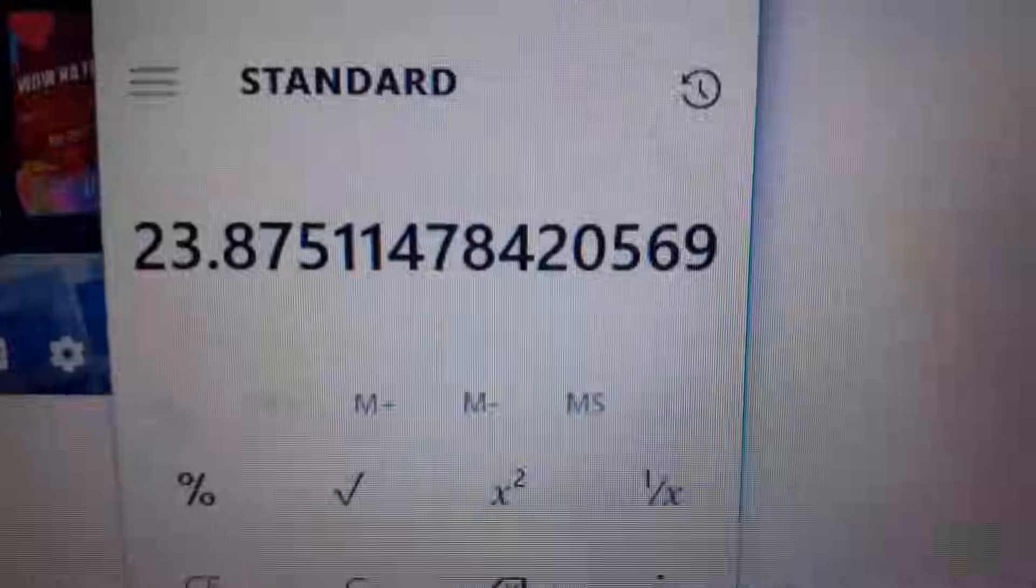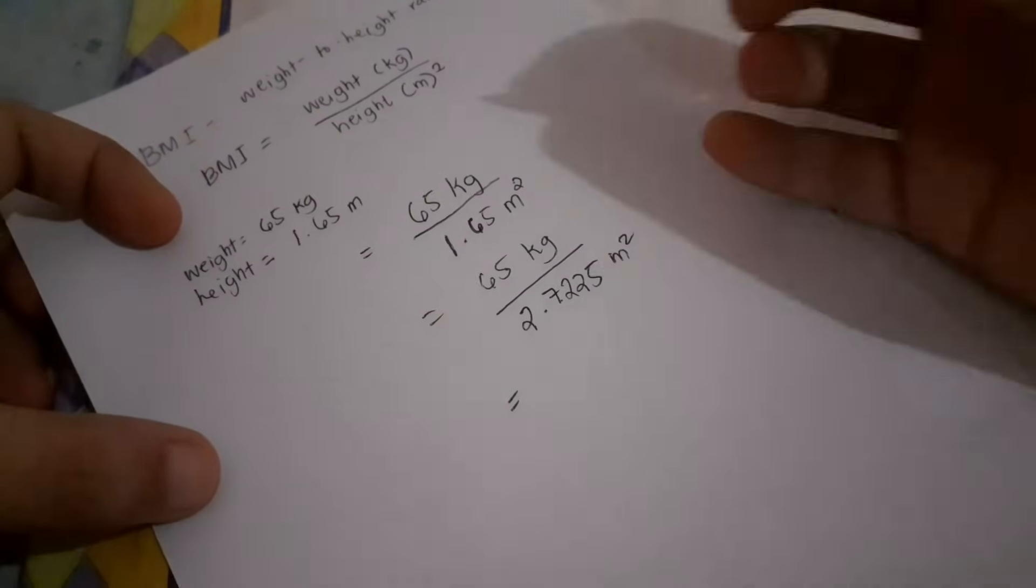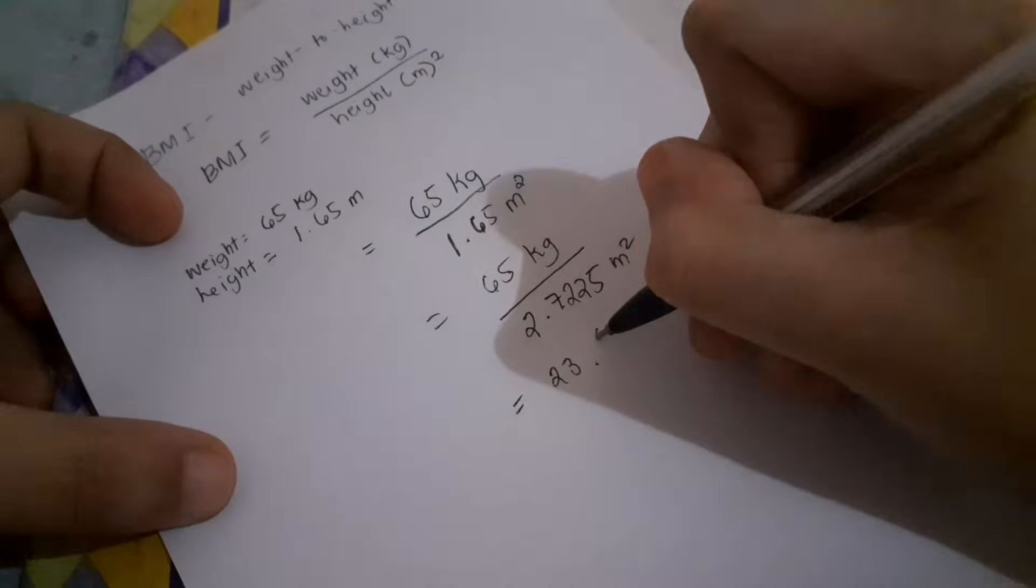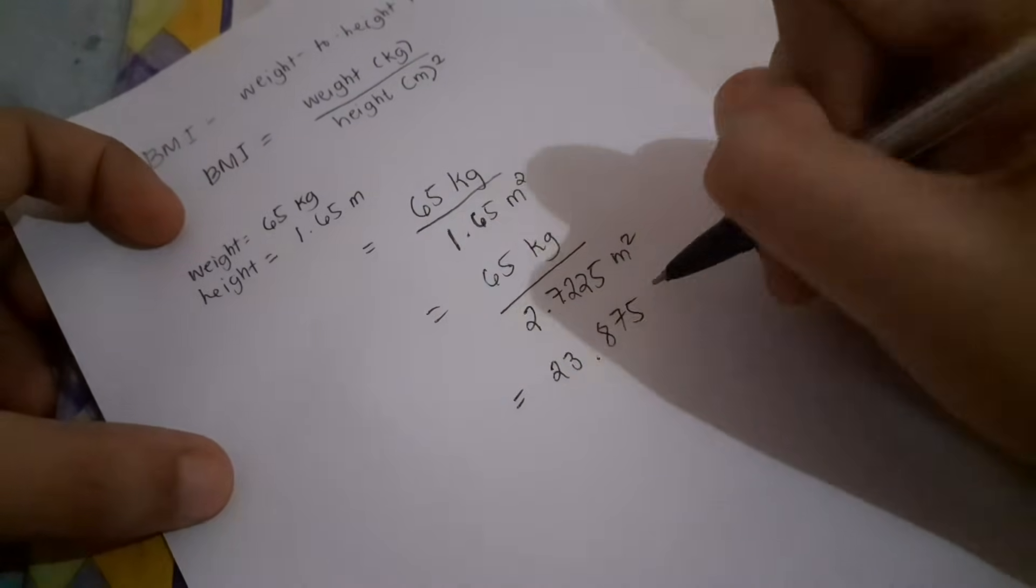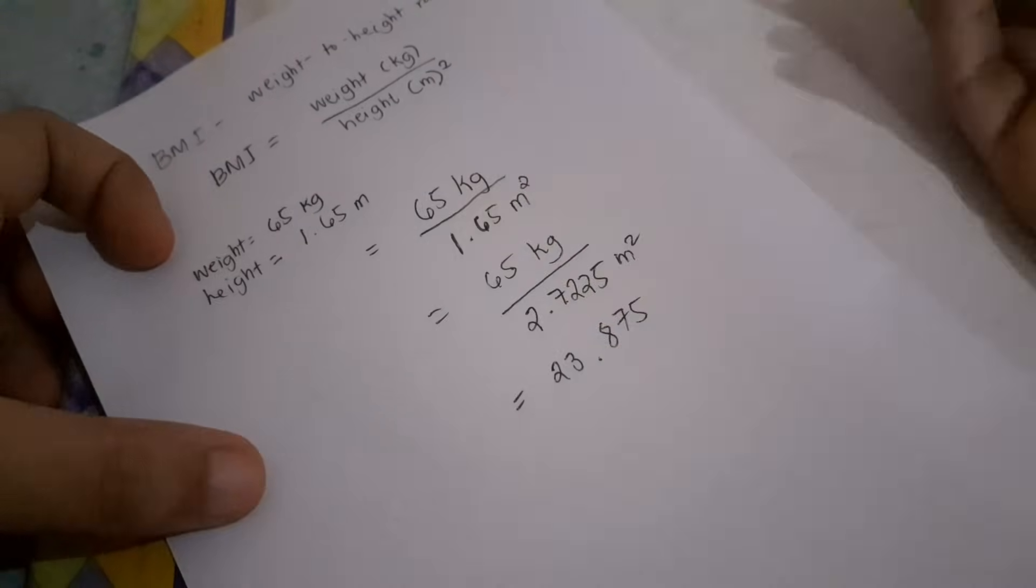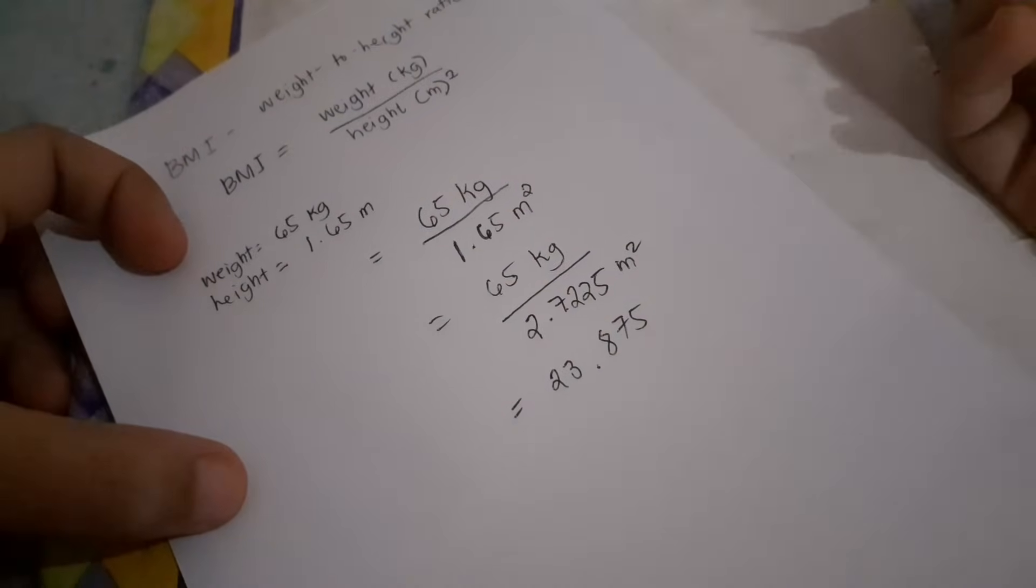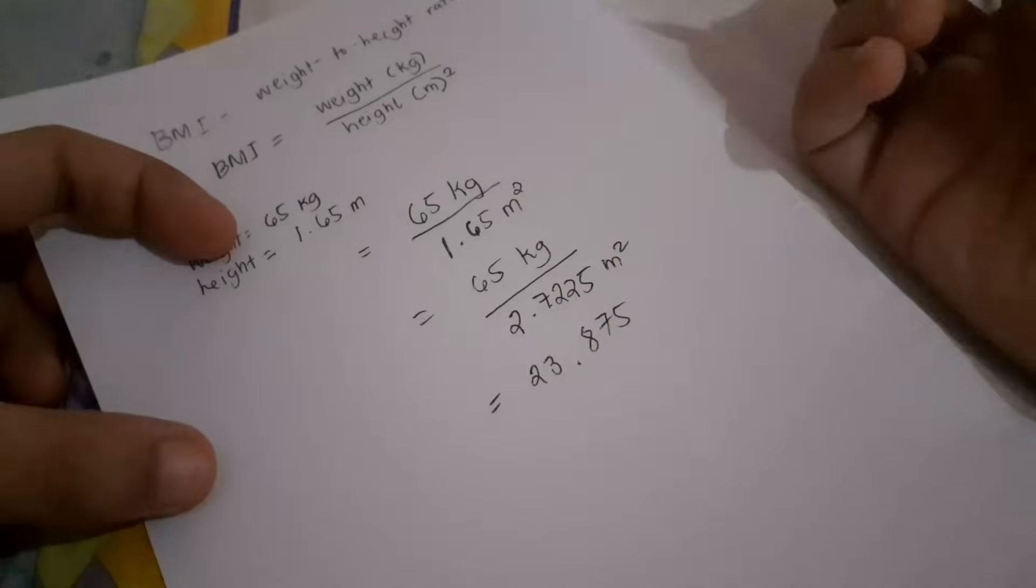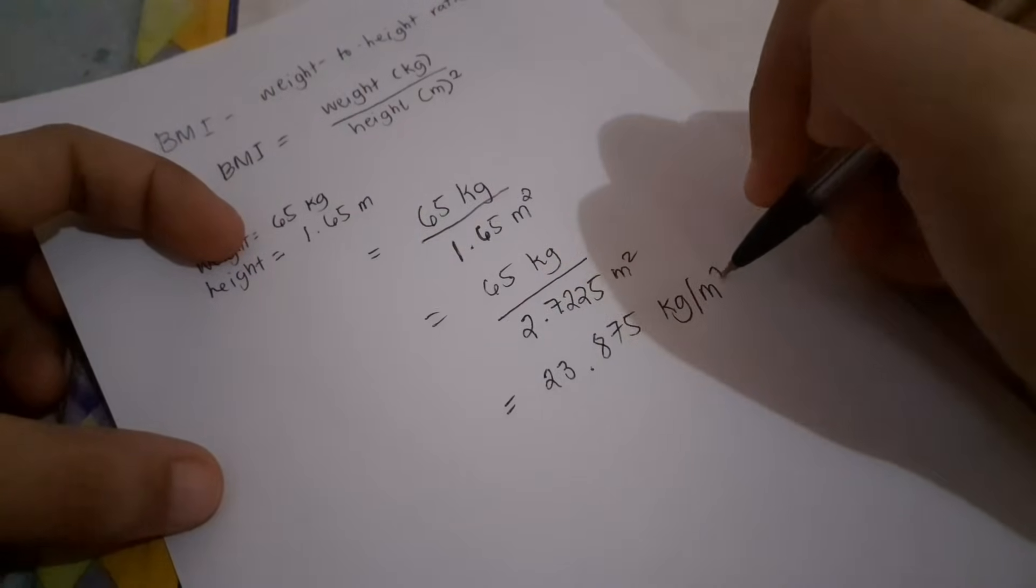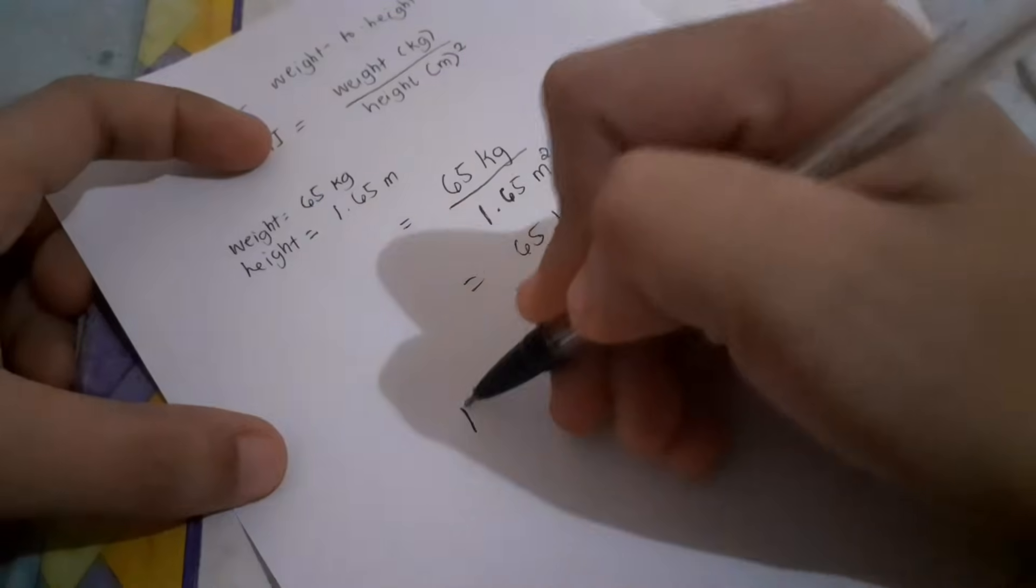Okay, let's copy this. The answer is 23.875 and so on. Round off ko na lang siya. And don't forget the unit, kg per meter squared. So ibig sabihin, ito na yung BMI mo.